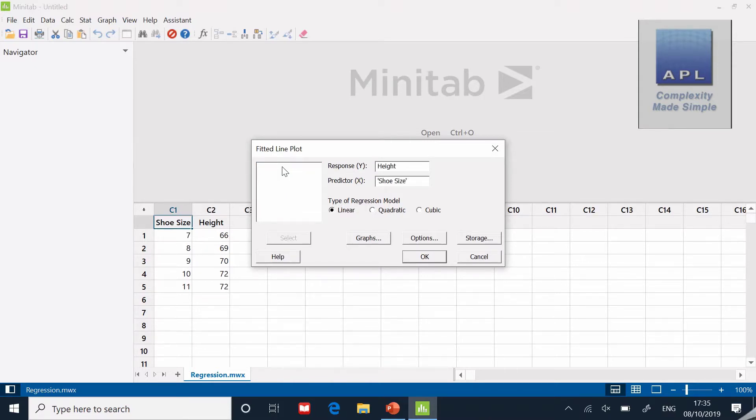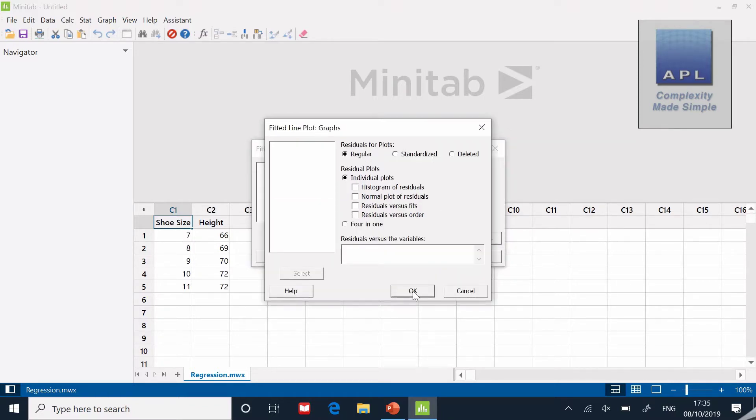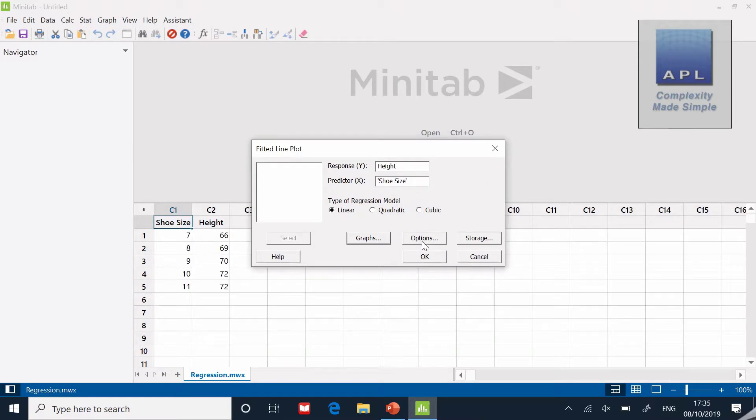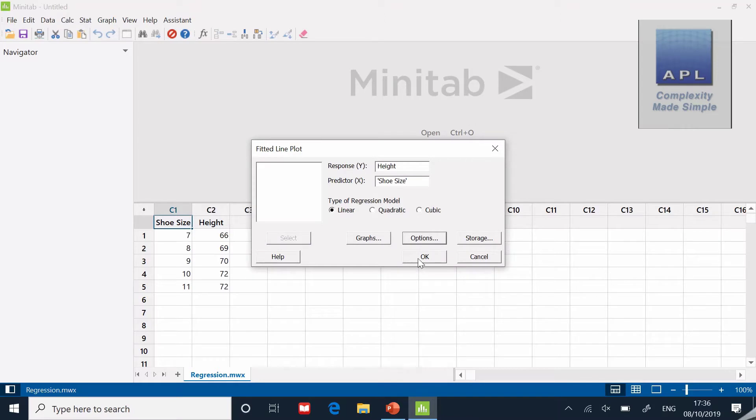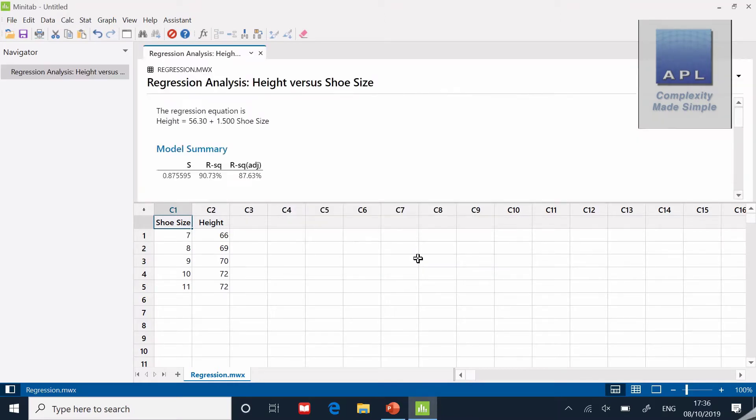Choose that. It asks for the output—height—and the input—shoe size. Then it starts asking for some other things. What sort of graphs would you want? I don't want to change that. Let's have a look at the options. It asks me to do a title, so wouldn't be a bad thing to go 'shoe size versus height inches.' Then click OK, and I'm just going to click OK.